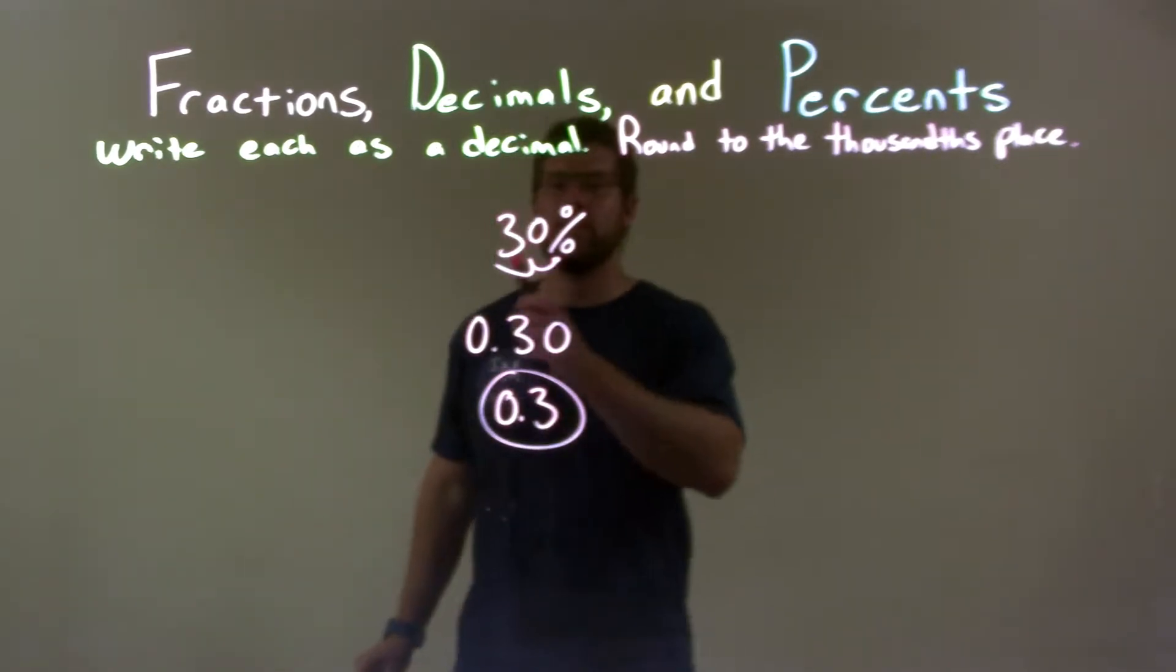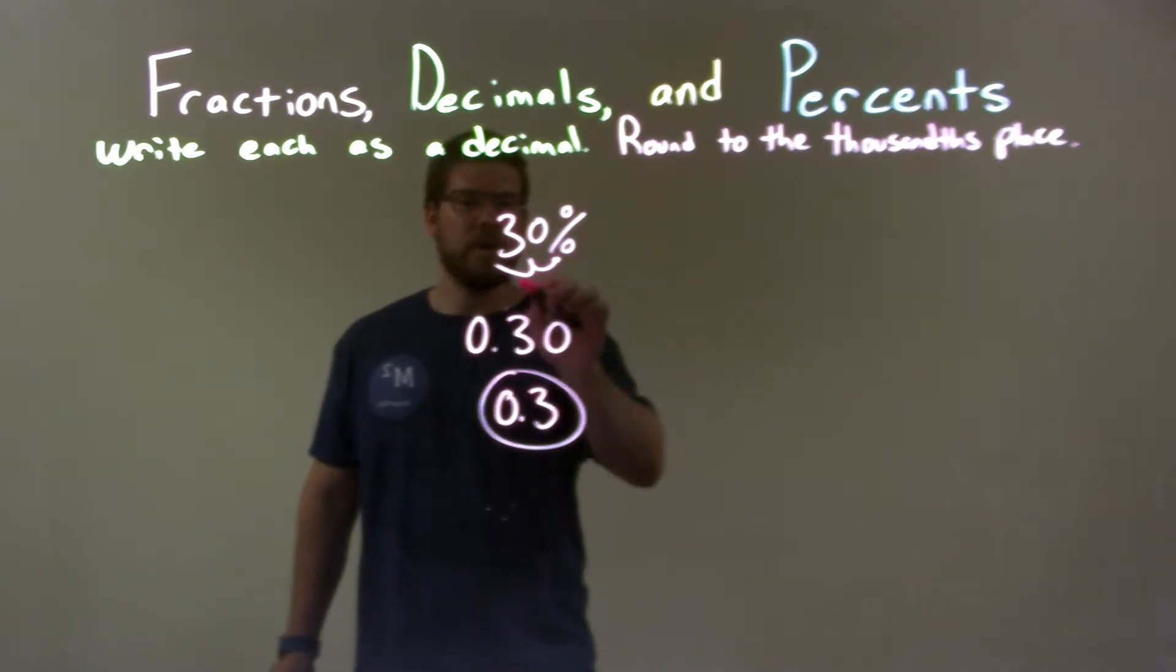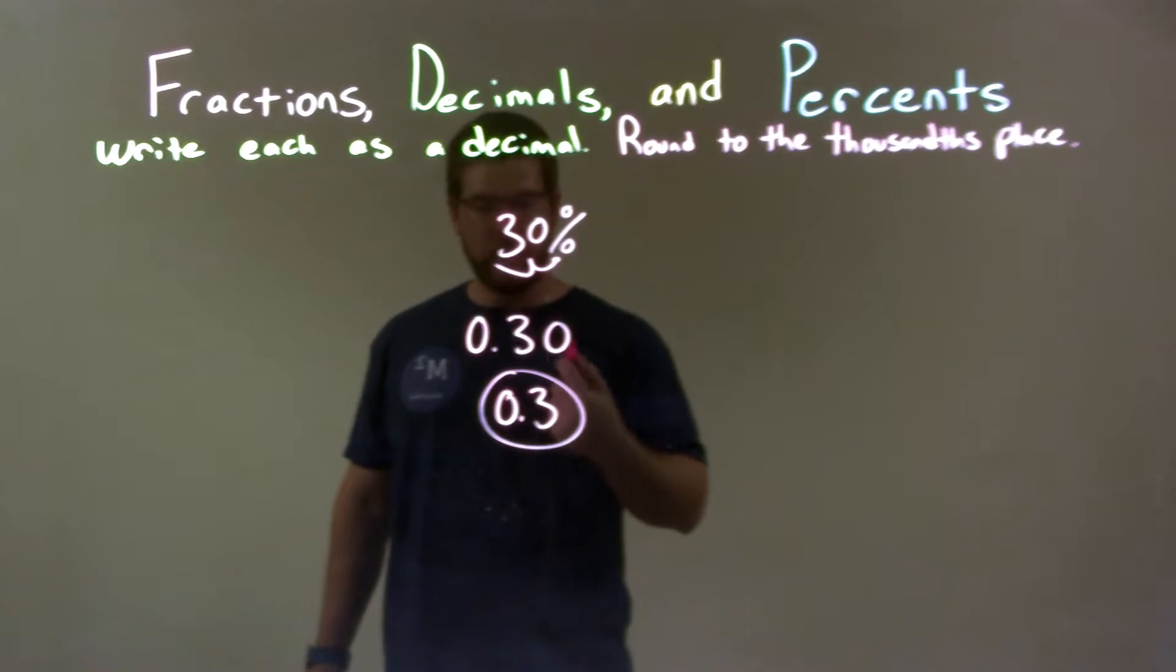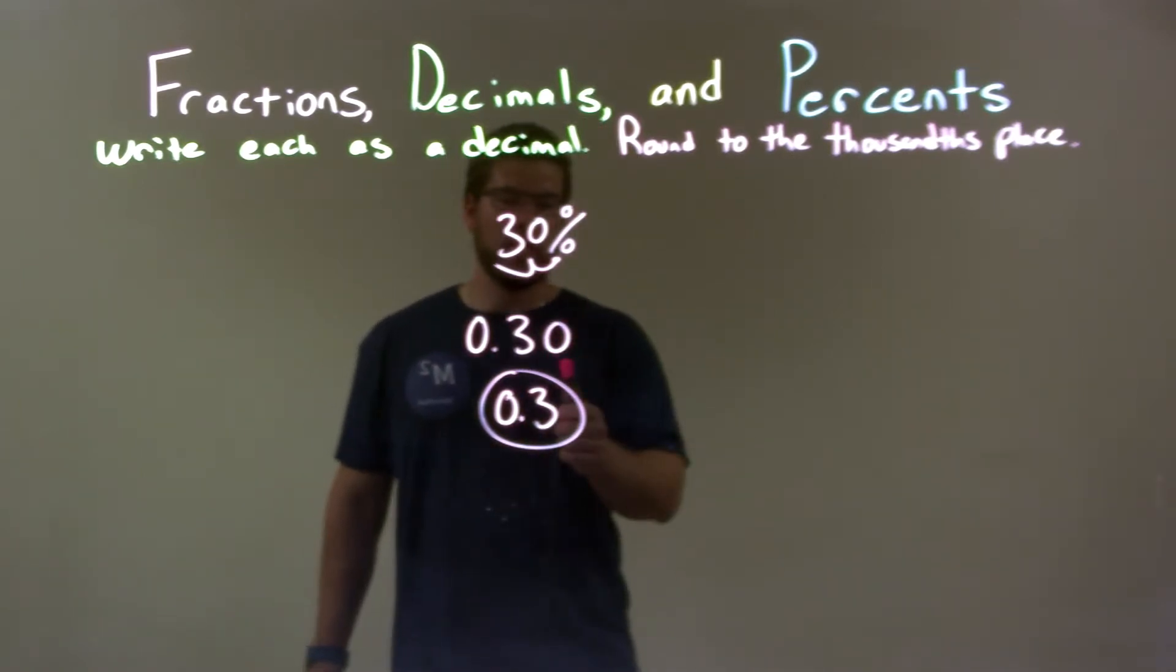So quick recap, we're given 30 percent and we have to write this as a decimal. Move the decimal place over two spots, the percent gets converted to a decimal that way, we have 0.30. Don't need the extra zero at the end, so our final answer is 0.3.